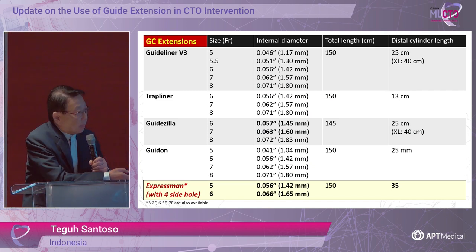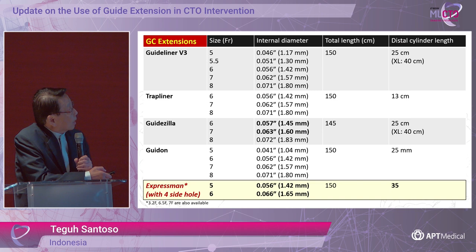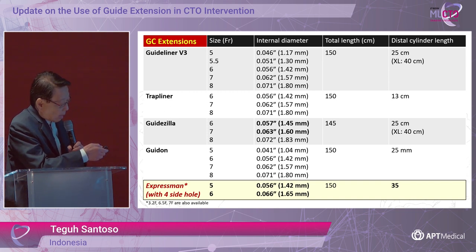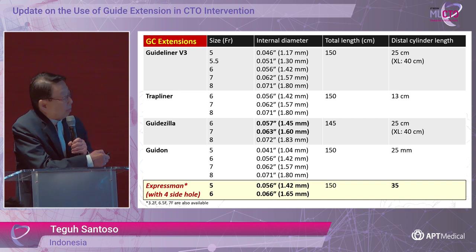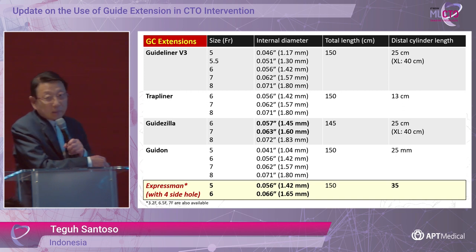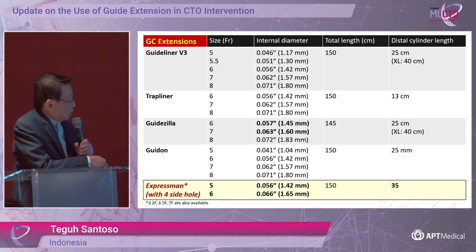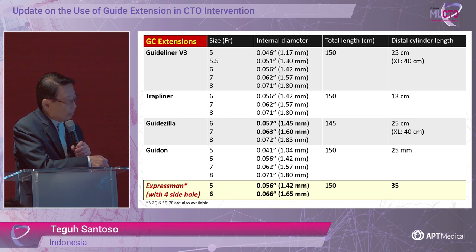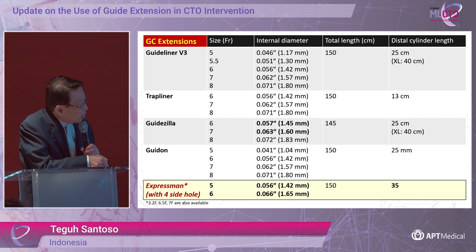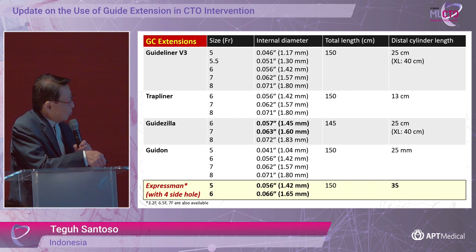We all know that there are many types of guide extension catheters in the market, and I believe most of us have a lot of experience with these. We have the GuideLiner V3, TrapLiner, Kite, Chila, and Guidion. Personally, I love the Expressman because with the same size it has a bigger lumen, a longer distal cylinder length compared to other competitors, and it has four side holes.